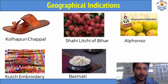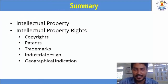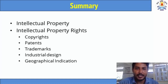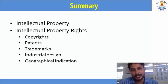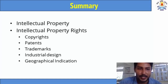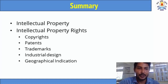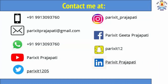Now, what we discussed till now: what is intellectual property — property created by the mind or intellect; what are the intellectual property rights — the rights arising from intellectual property; and what are the types of intellectual property rights — copyrights, patents, trademarks, industrial design, and geographical indications. This was all about intellectual property rights. Thank you.